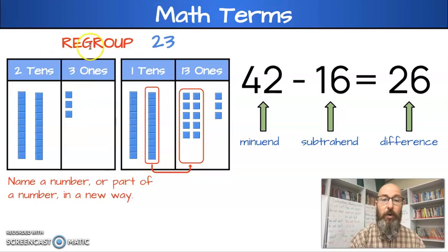Next, we have the word regroup. And when you regroup, and you've probably heard your teacher say this, it's when you name a number or part of a number in a new way. You can see I did it here with 23. I have two tens. That's 20. Three ones. That's 3. So that's 23. But I can take one of those tens and move it over here. And I still have 23.